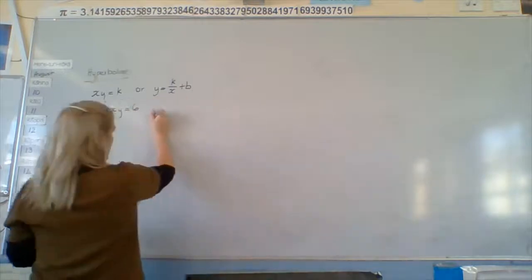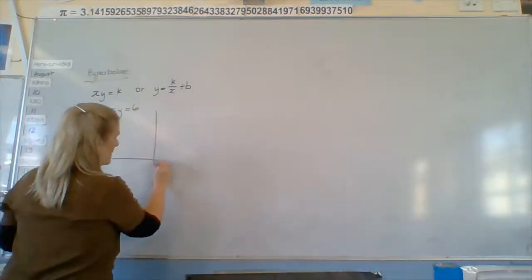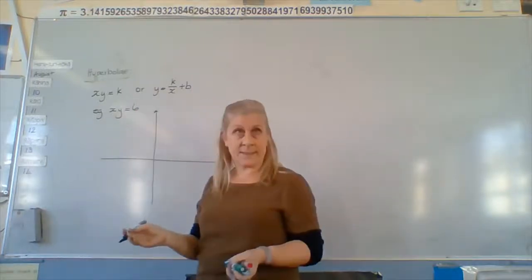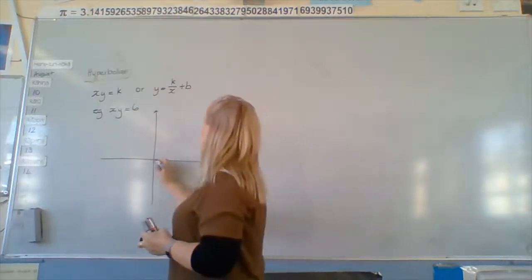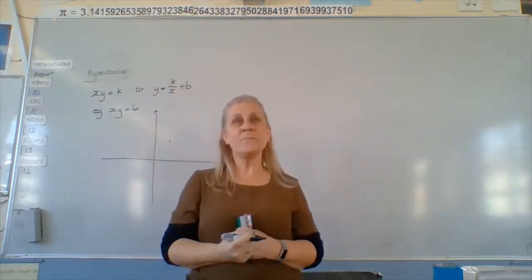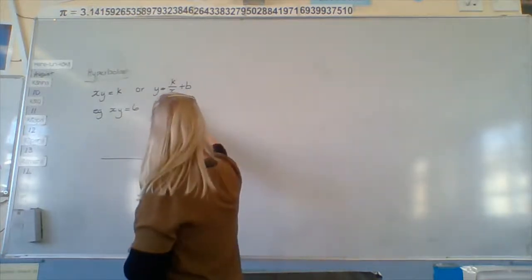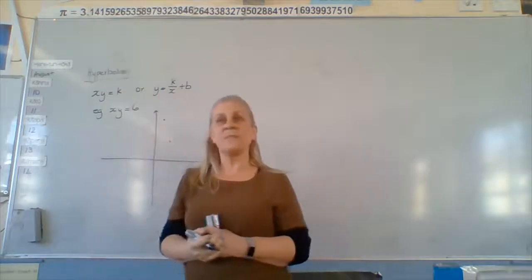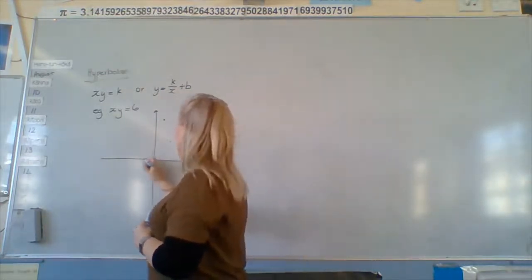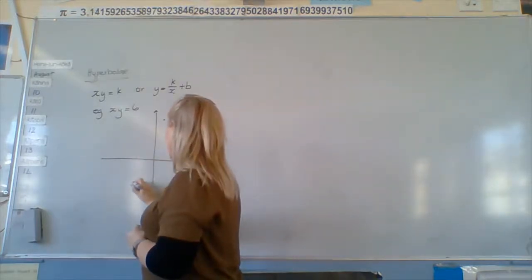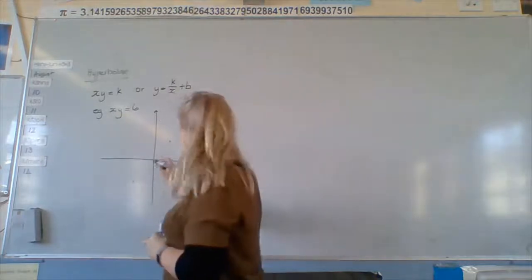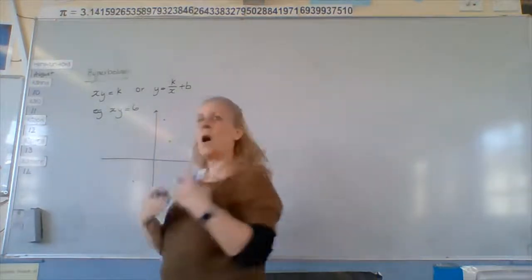And what we're going to do is graph all of those things. So what two numbers multiply to give six? Two and three. Yep. What else? One and six. Anything else? Negative two and three. Negative two and negative three. Good. More? Negative one and negative three. Okay. Cool. More?